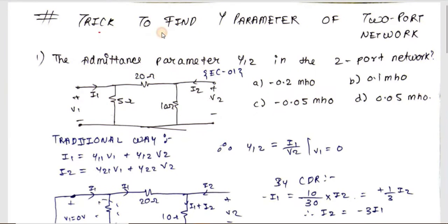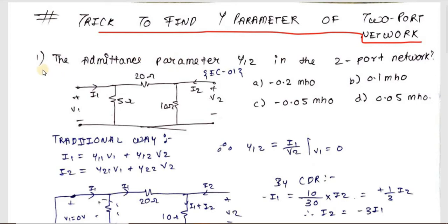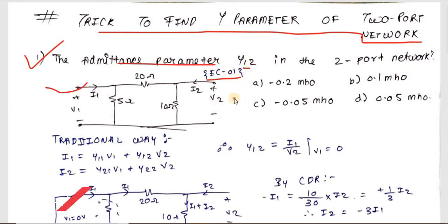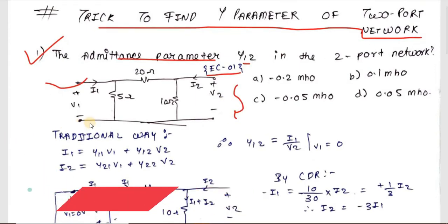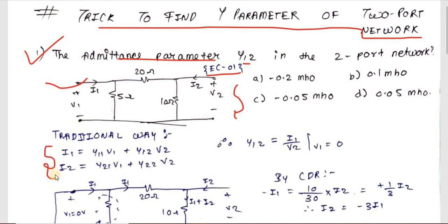Hello friends, today we are going to see the trick to find Y parameters of a two-port network. Without wasting time, let's start with the first sum — that's where we will see the trick. The first sum is from EC 2001: find the admittance parameter Y12 in the two-port network. First, let us see the traditional way, and after that we will see the trick.